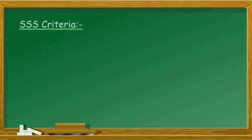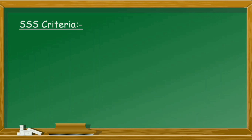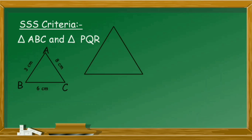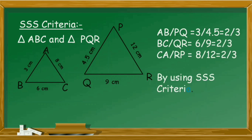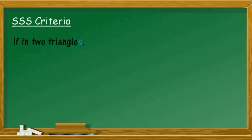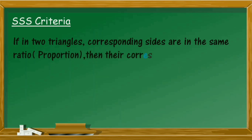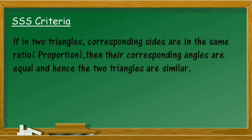Next, let us talk about SSS similarity criteria. Please don't confuse this with the SSS congruency criteria — SSS congruency means sides have to be exactly equal, while SSS similarity criteria says the corresponding sides are in the same ratio. Consider triangle ABC and triangle PQR where AB/PQ equals 2/3, BC/QR equals 2/3, and CA/RP equals 2/3. Since corresponding sides are in the same ratio, by SSS criteria, triangle ABC is similar to triangle PQR. SSS criteria states that if corresponding sides of two triangles are in the same ratio, then their corresponding angles are equal and hence the triangles are similar.